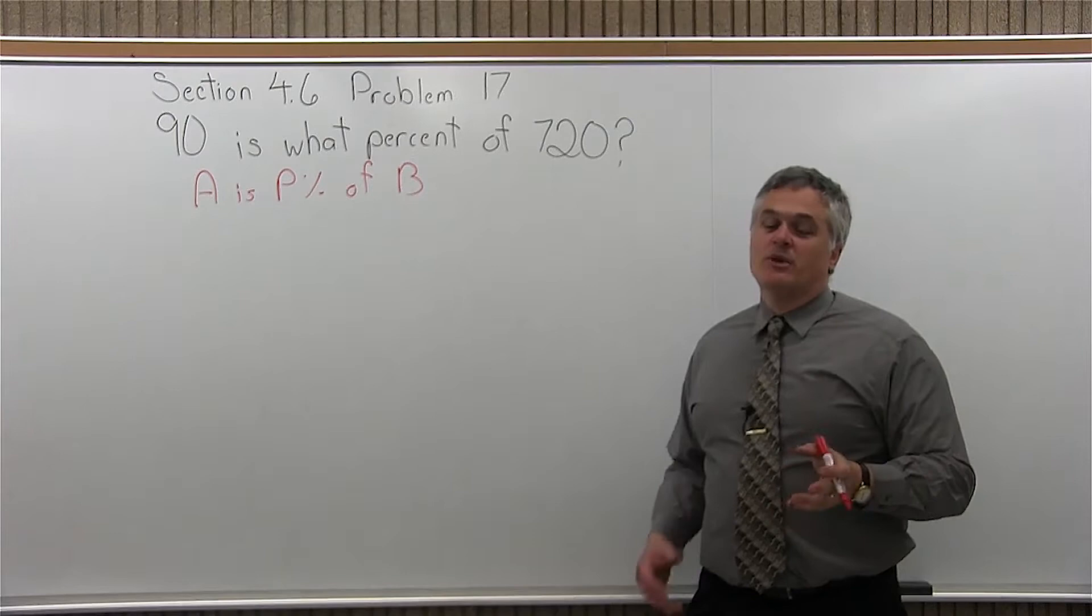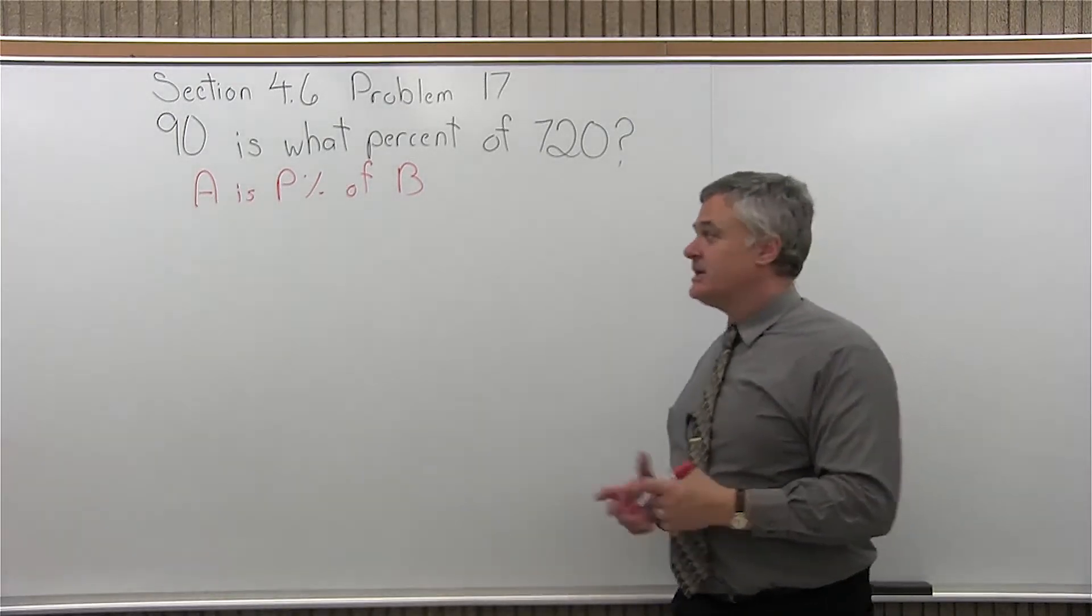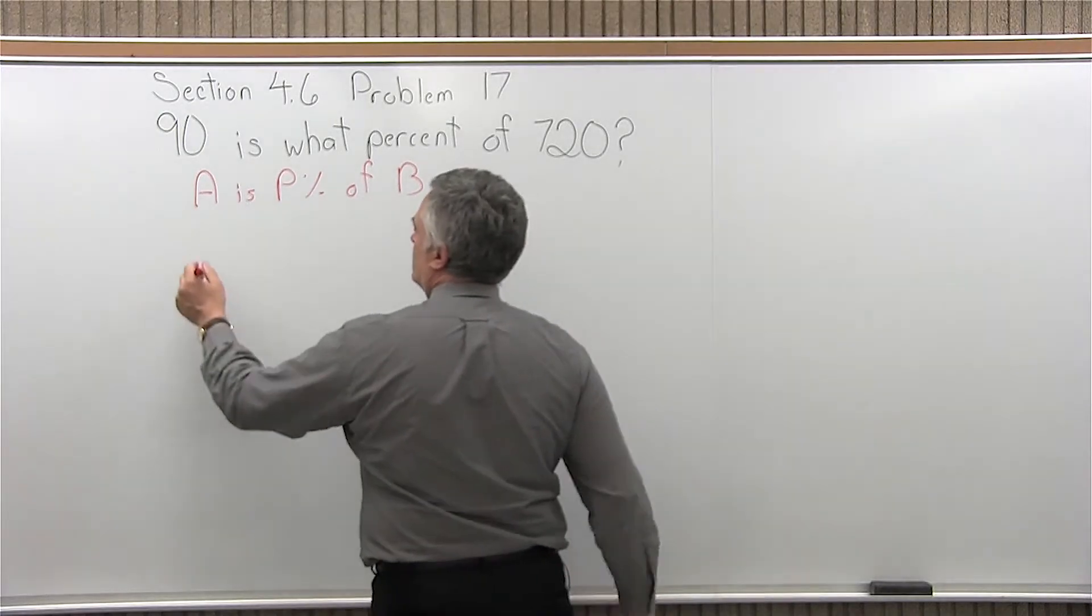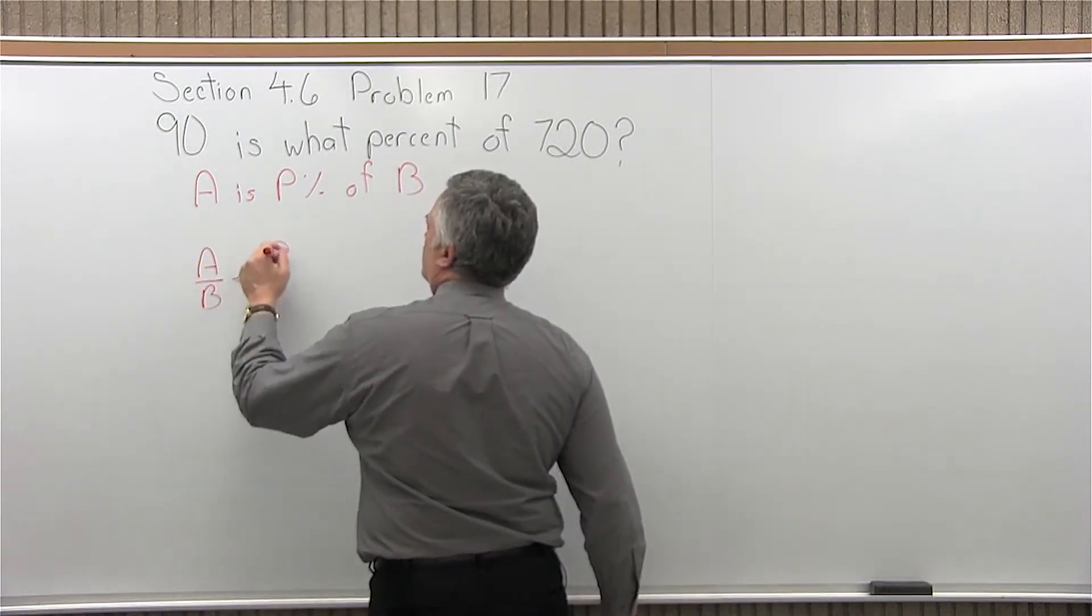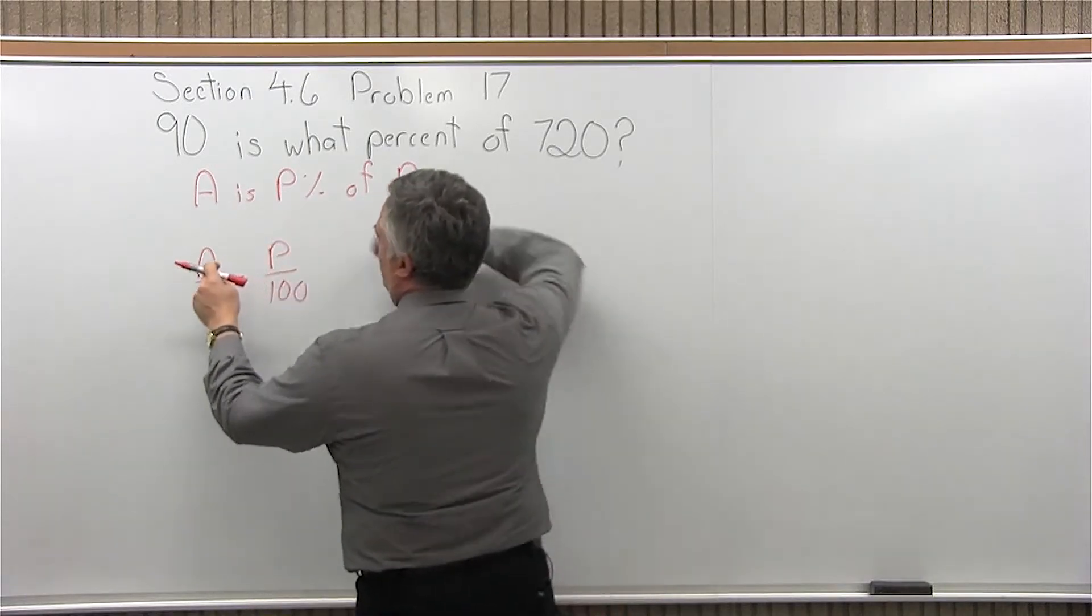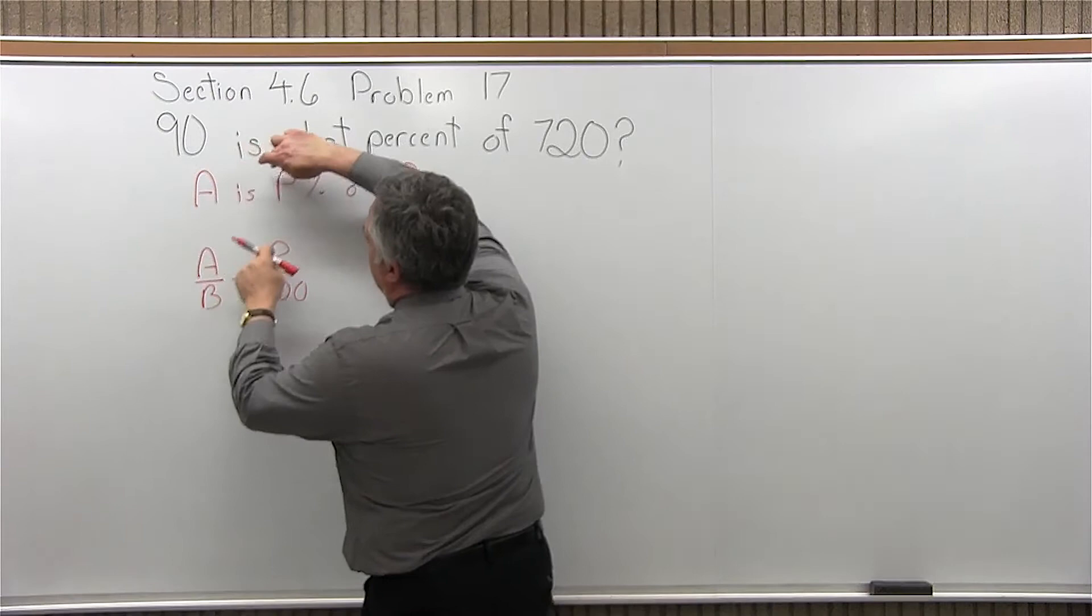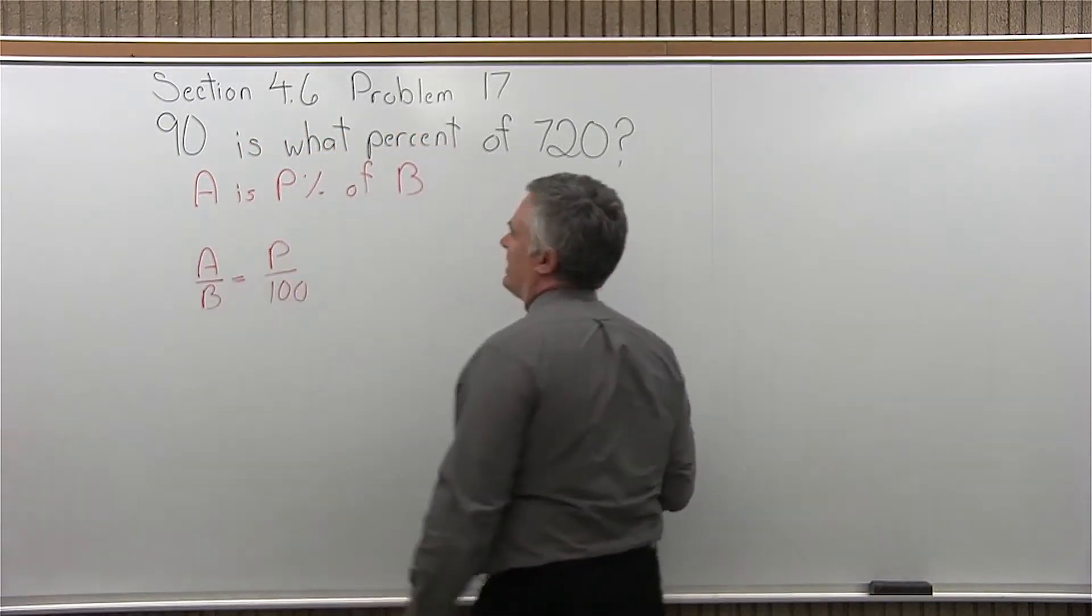If we didn't have the form that we wanted, we'd have to rearrange the question so it's in that A is P percent of B form. But it is, right from the question. So our proportion, we'll use the formula A over B equals P over 100. And as you fill this in, what I say is you go around the circle. A is P percent of B. Just go right around and come back to the beginning.